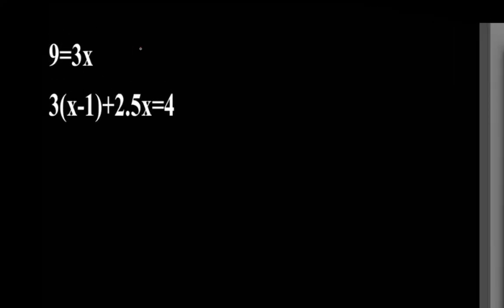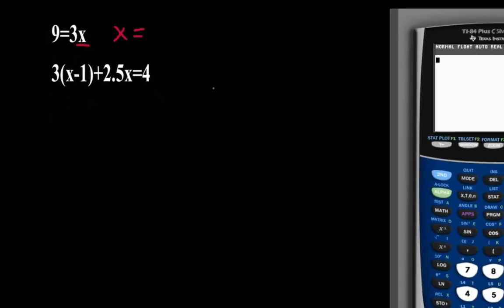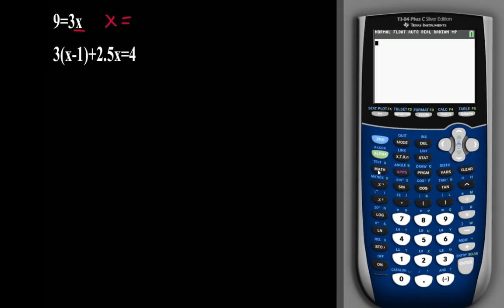So this is the equation that we have, 9 equals 3x, and we want to find the value of x. So we're going to start out by pressing on math, and then we're going to scroll all the way to the bottom, and we will see a popup that says solver.